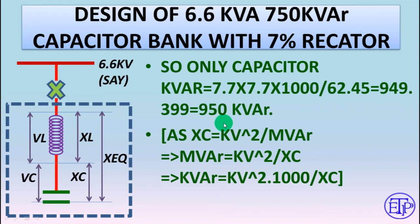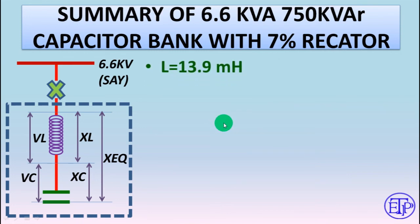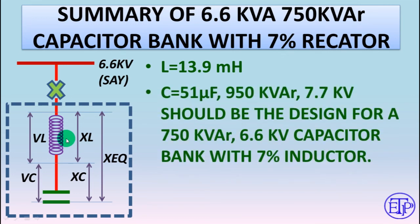The summary of the design: inductance = 13.9 mH, capacitance = 51 microfarads, 950 KVAR at 7.7 kV. This is the complete design for a 750 KVAR, 6.6 kV capacitor bank with a 7% inductor. When sizing a capacitor bank, first check the power factor improvement required to find the KVAR rating of the entire capacitor-reactor bank, then select the individual component ratings using this formula.